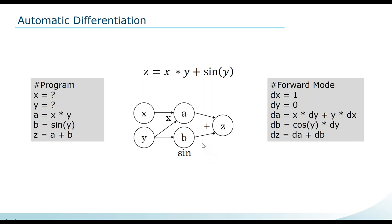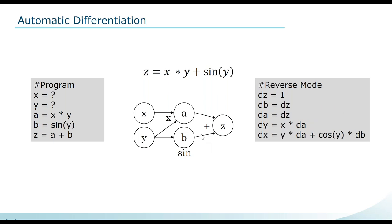In statistical inference, our output parameter tends to be our objective function — our log likelihood — so we have one output and many input variables. It's therefore preferred to use reverse mode automatic differentiation, where we do a forward pass calculating intermediate variables, then one reverse mode pass calculating all partial derivatives. The challenge is that we must save all intermediate variables in memory, and for complex functions this can be substantial, requiring various algorithms to minimize memory cost.